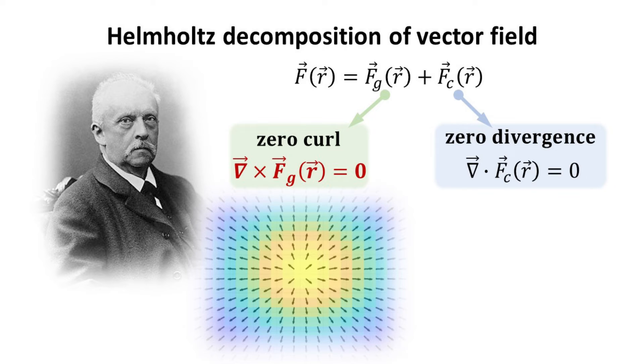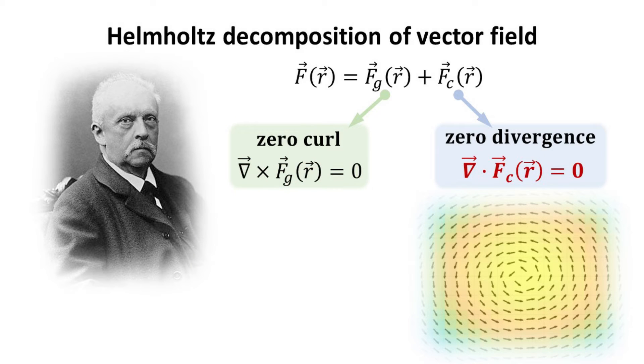F_G is the vector field that has zero curl, which means the field is irrotational, while F_C is the vector field that has zero divergence. It captures the rotational or solenoidal part.